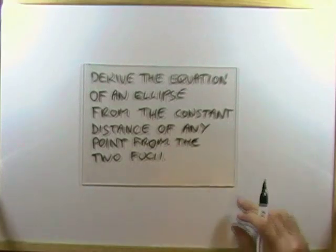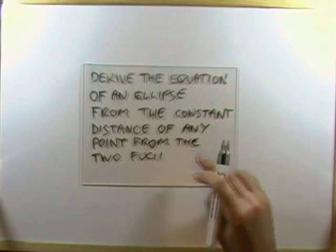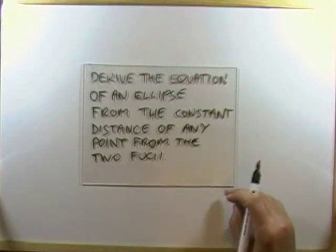So, derive the equation of an ellipse, not from the conic section properties, but from the constant distance of any point on it from its two foci.